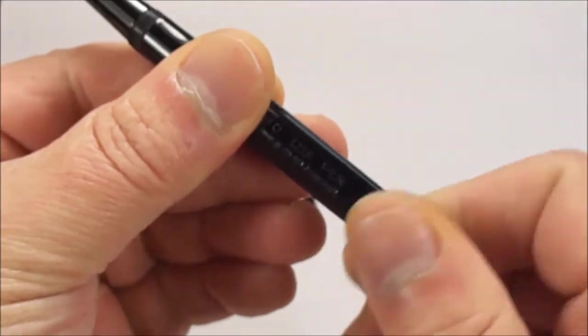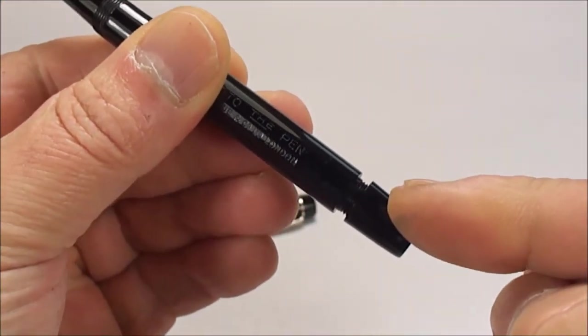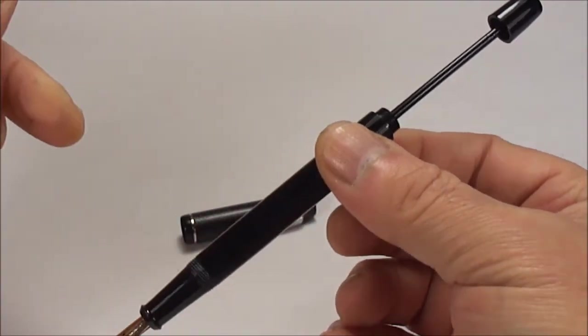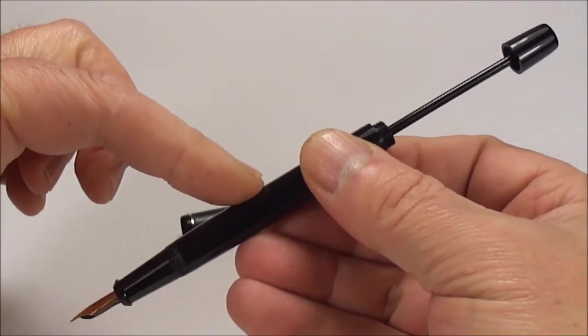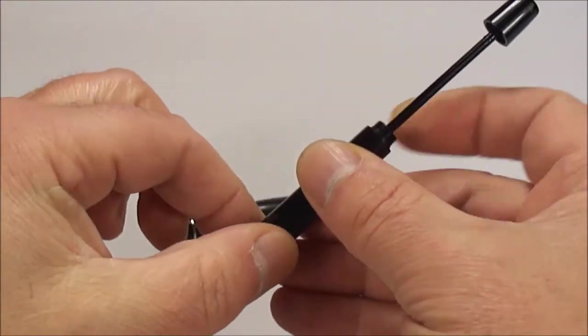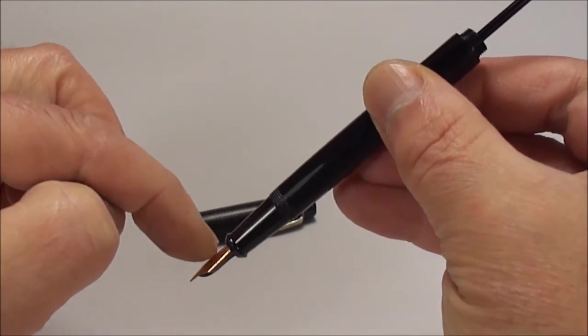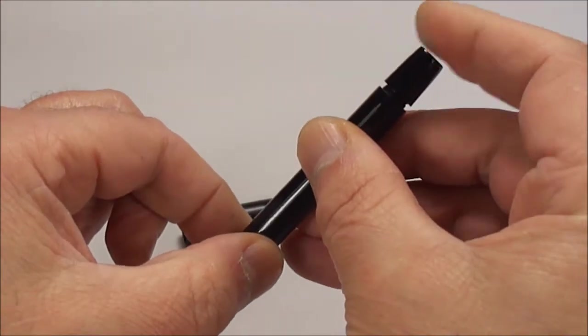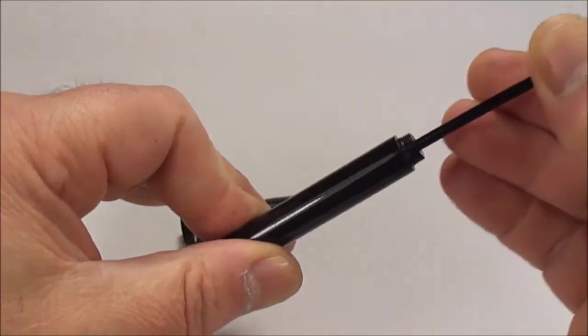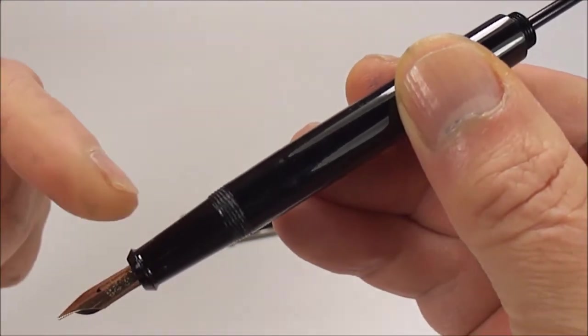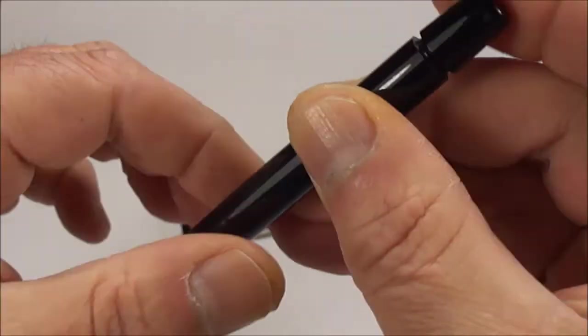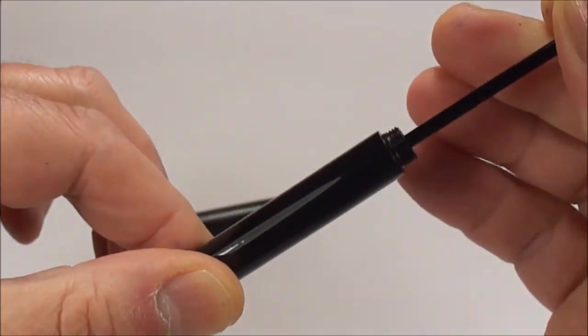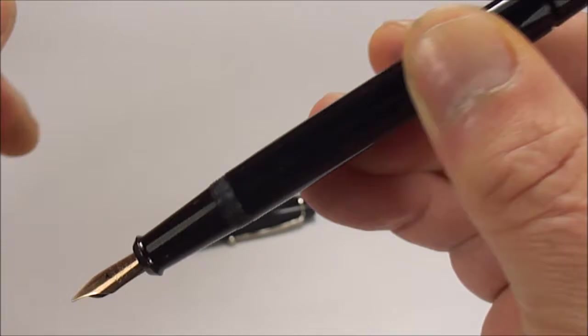So, what we do, we simply unscrew the plunger knob or blind cap. And what we do, we pull out the plunger like so. And to fill these pens, again for you people that don't know, the pen fills by simply immersing the nib in the ink and quickly, in one movement, pressing the plunger down as far as it'll go. So, now, if I bring it a little bit closer, I'm hoping you may be able to hear this sort of slight popping sound from this particular area here. Once again, there we go.